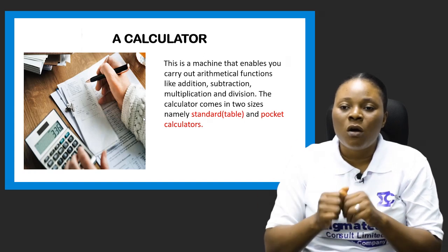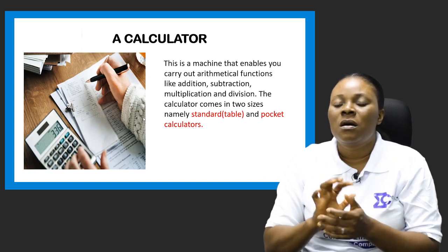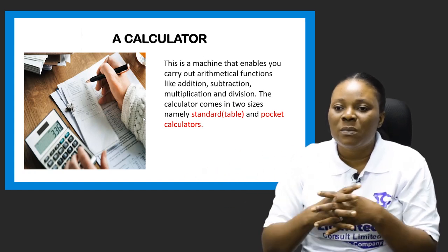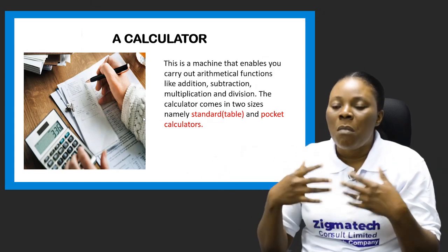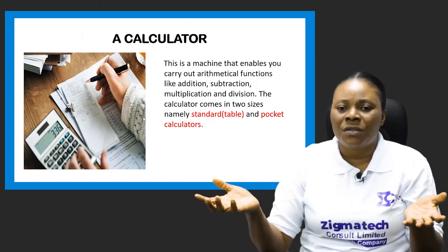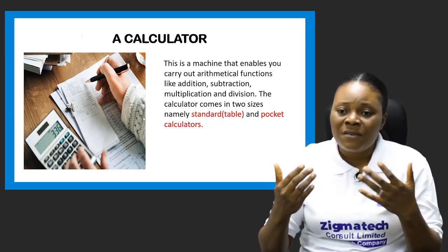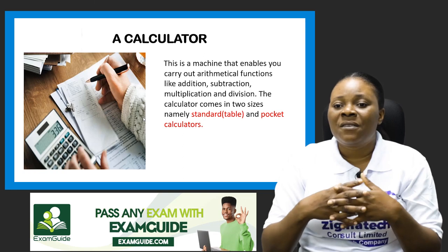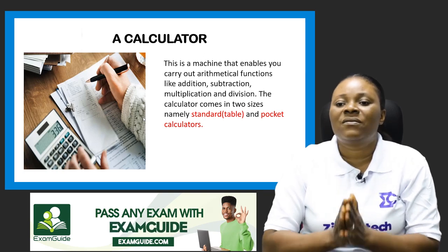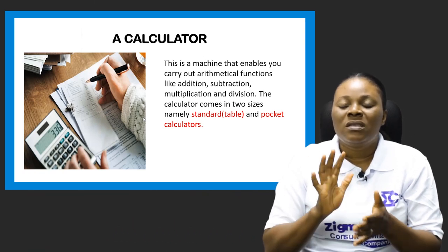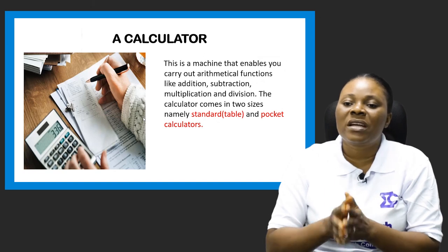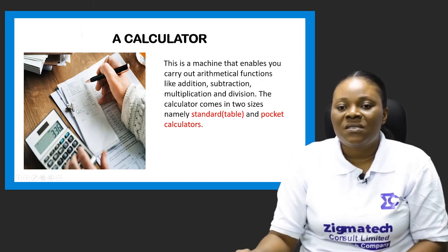Another equipment is the calculator or calculating machine. This is a very common but essential piece of equipment. It is a machine that enables you to carry out arithmetical functions — different arithmetical functions like addition, subtraction, multiplication, and division. It is needed by accountants and by almost everyone, including students. We have two basic sizes: the standard or table-size calculator and the pocket-size calculator. It assists you in getting accurate answers for your arithmetical activities.